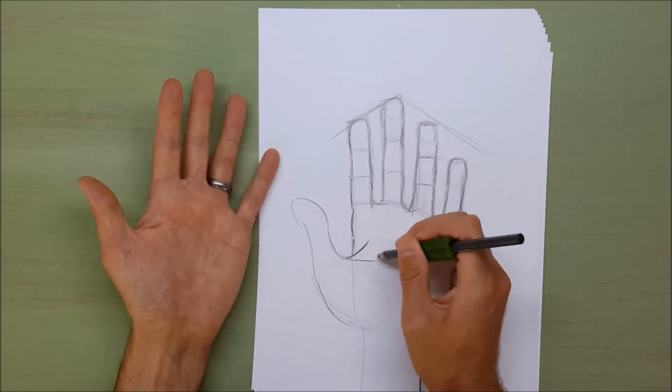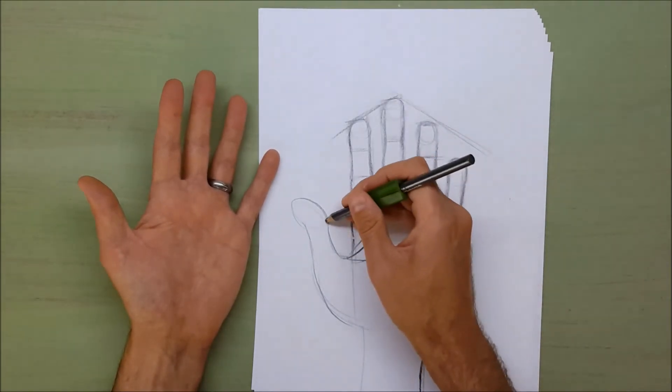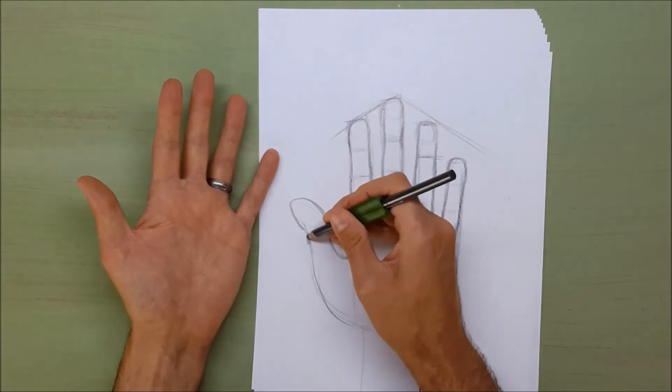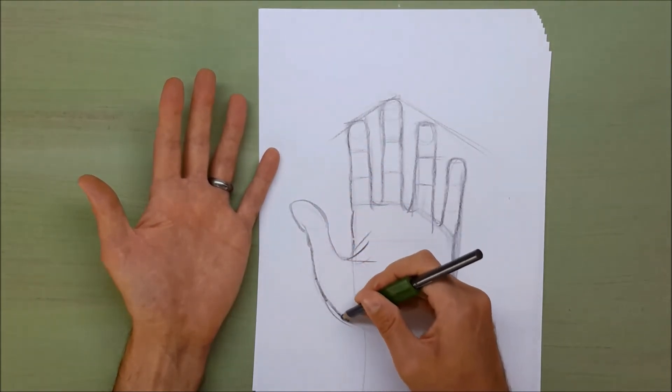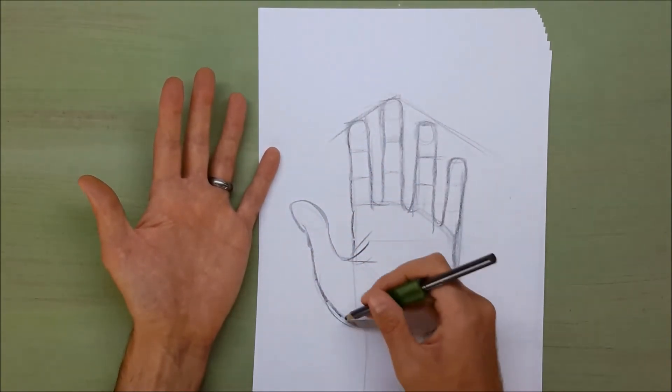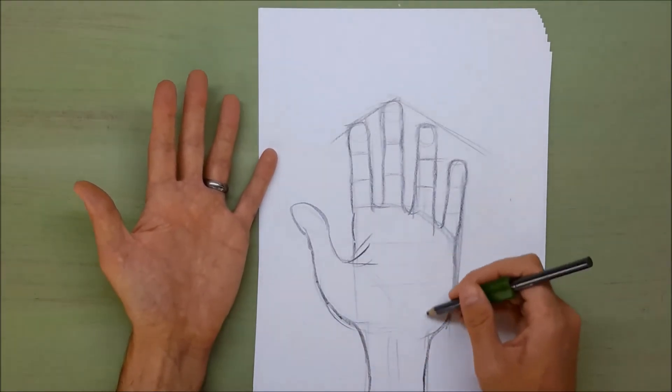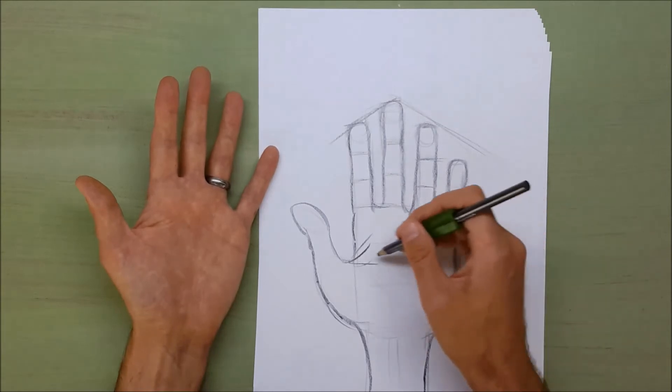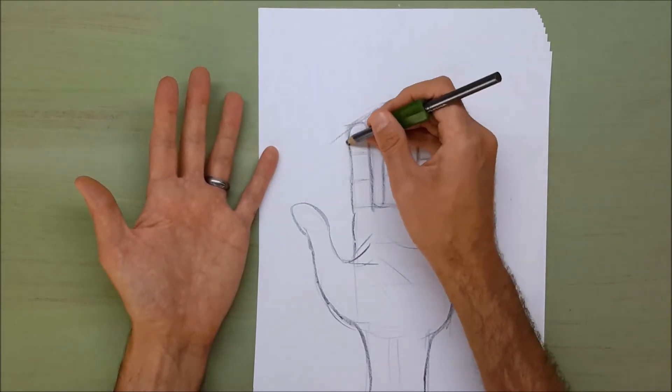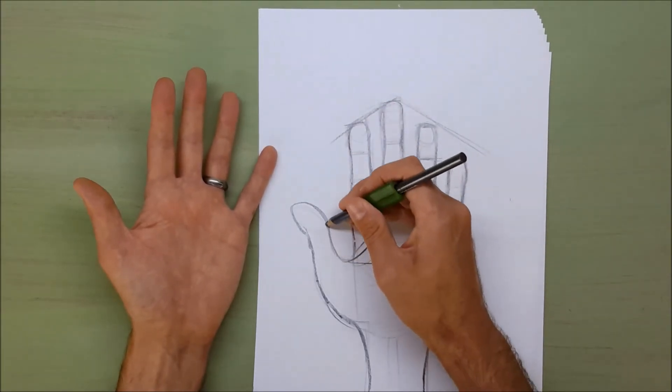All right, I'm going to draw some wrinkle lines here for the thumb. I'm going to round, so I don't want a perfect angle here. I'm going to round that out to the wrist and just a few extra lines there.